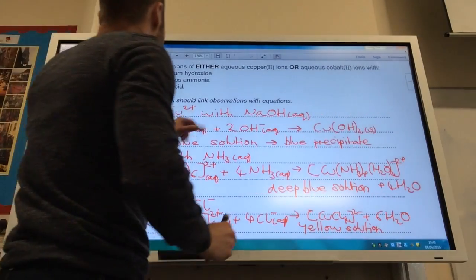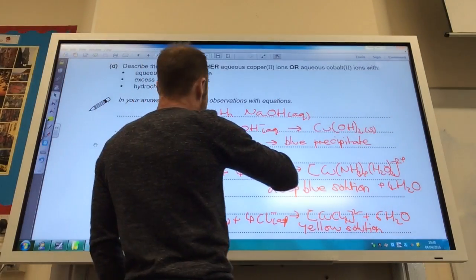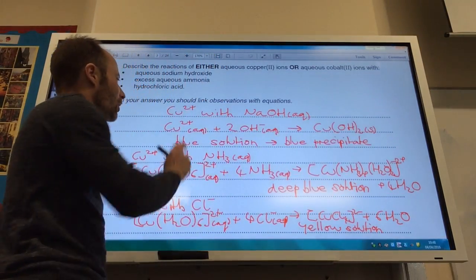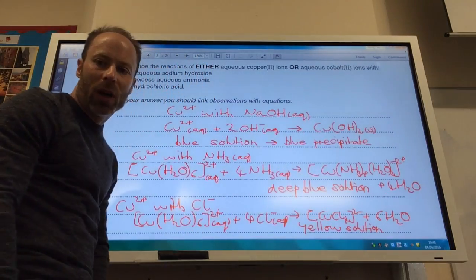with sodium hydroxide solution, copper 2+ plus sodium hydroxide solution, you make a blue solution, goes to a blue precipitate, and your copper 2+ plus 2 hydroxide gives you copper 2 hydroxide.